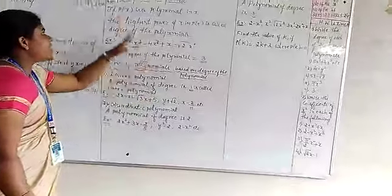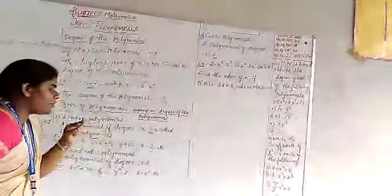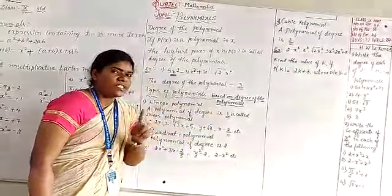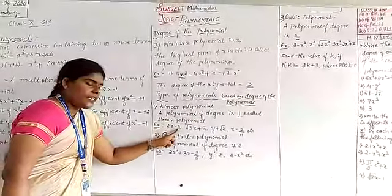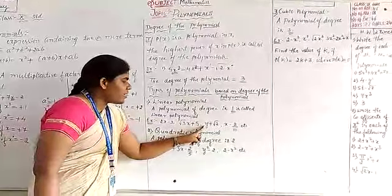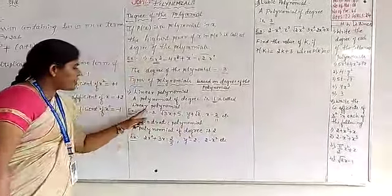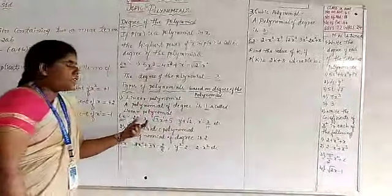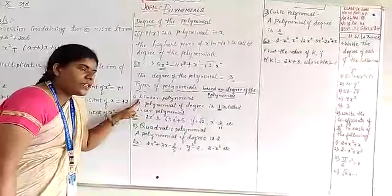Based on the degree of the polynomial, there are types. The first type is a linear polynomial — a polynomial of degree 1. Examples: 2x − 3, √3x + 5, y + √2, x − 2/11, etc. In all these, the highest power is 1. This type of polynomial is called a linear polynomial.